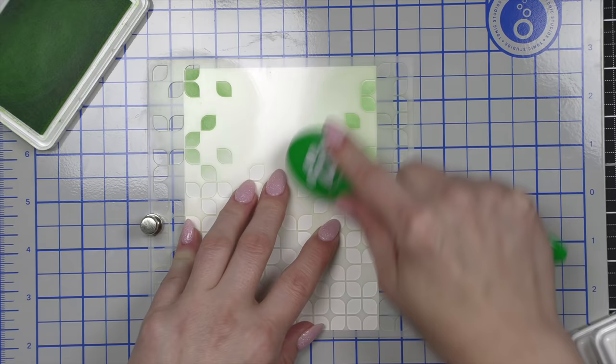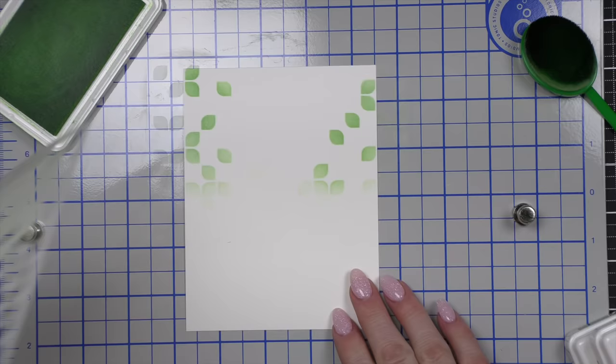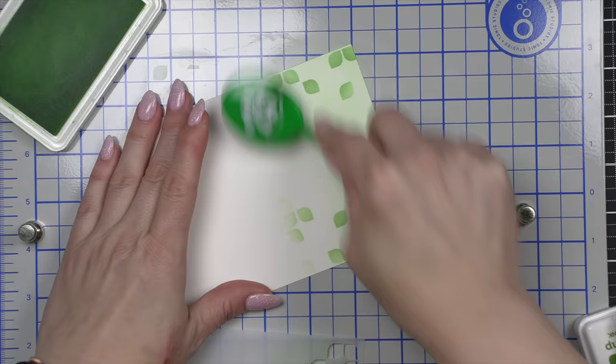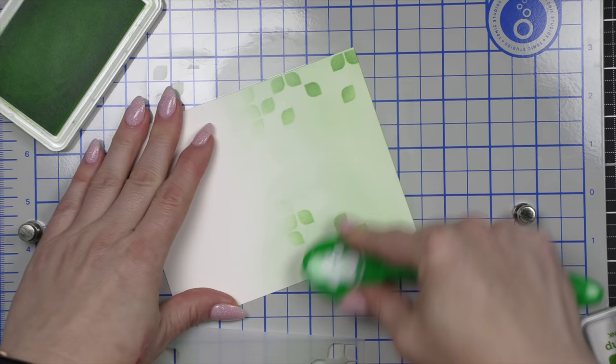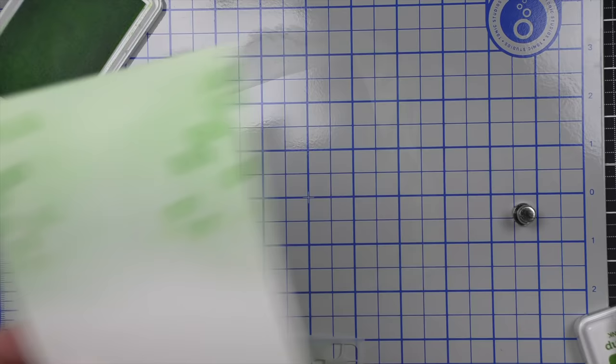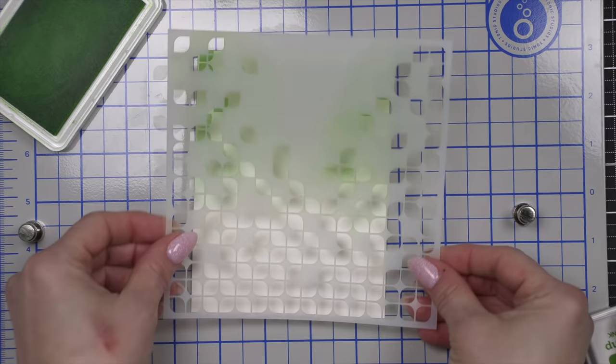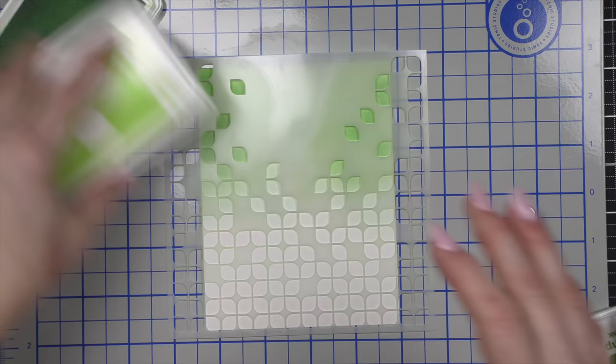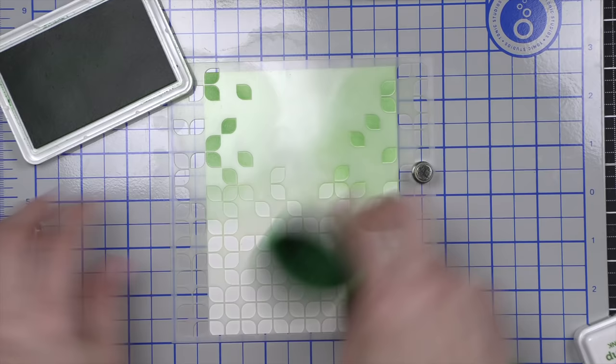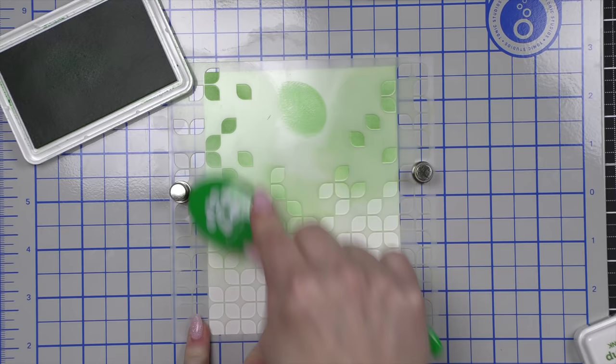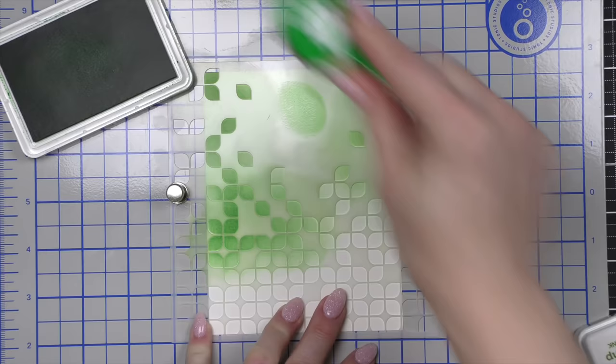Now I decided to go ahead and ink up my background with this Geo Leaves stencil from Simon Says Stamp and I thought I would ink first with the leaves and then add some ink blending over the top. I want my background to all be green but I want it to still have some subtle pattern to it. I think ultimately I would have rather maybe inked the background and then done my stenciling. Either way will work but you're going to see me build it this way.